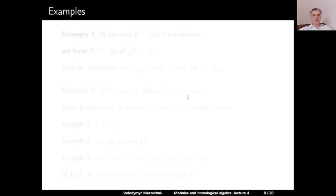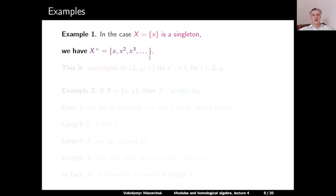Here are some examples. Example 1: assume that X consists of one letter x. Then the semigroup of all words in one letter consists of x, x², x³, and so on. This is isomorphic to the additive semigroup of positive integers under the isomorphism which sends the word xⁱ to the integer i, where i is a positive integer. So the free semigroup on one letter is exactly the additive semigroup of all positive integers.